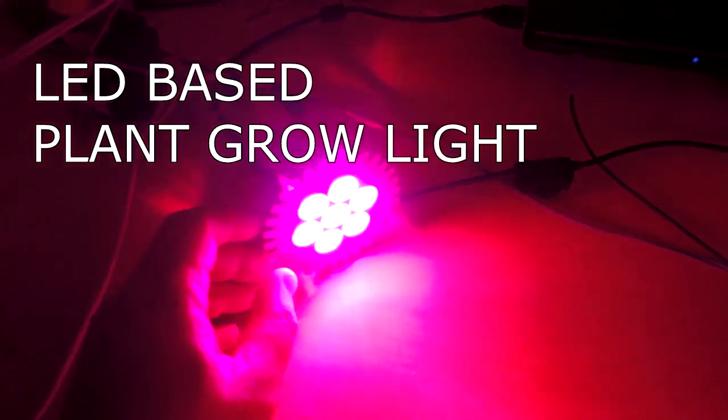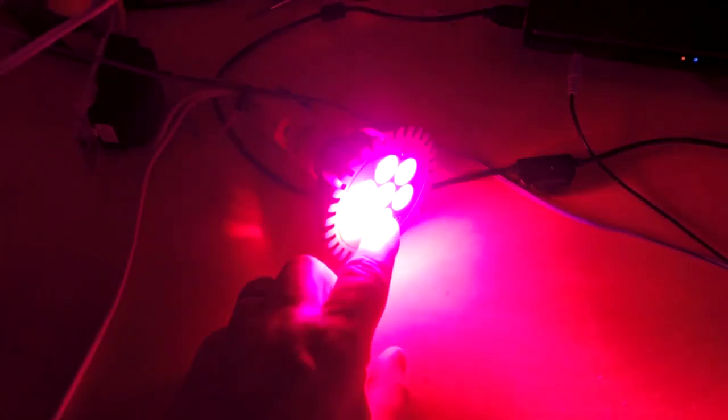What is a strange looking bulb? It has two color LEDs in it. The center LED is blue, and all the outside LEDs are red. And it's meant for growing plants,